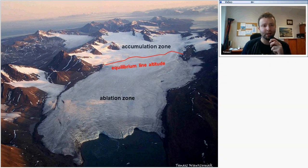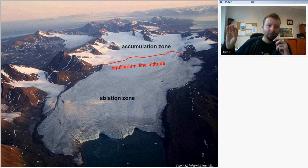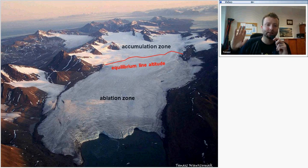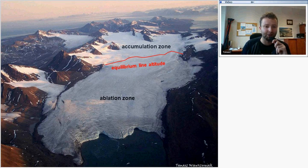Here is another picture taken in late summer. Only in the upper parts of the glacier is there some snow from the previous winter that did not melt throughout the summer. That is the accumulation zone. Below it is a zone where all the snow and even some glacier ice melted away. In between there is the equilibrium line altitude, ELA.